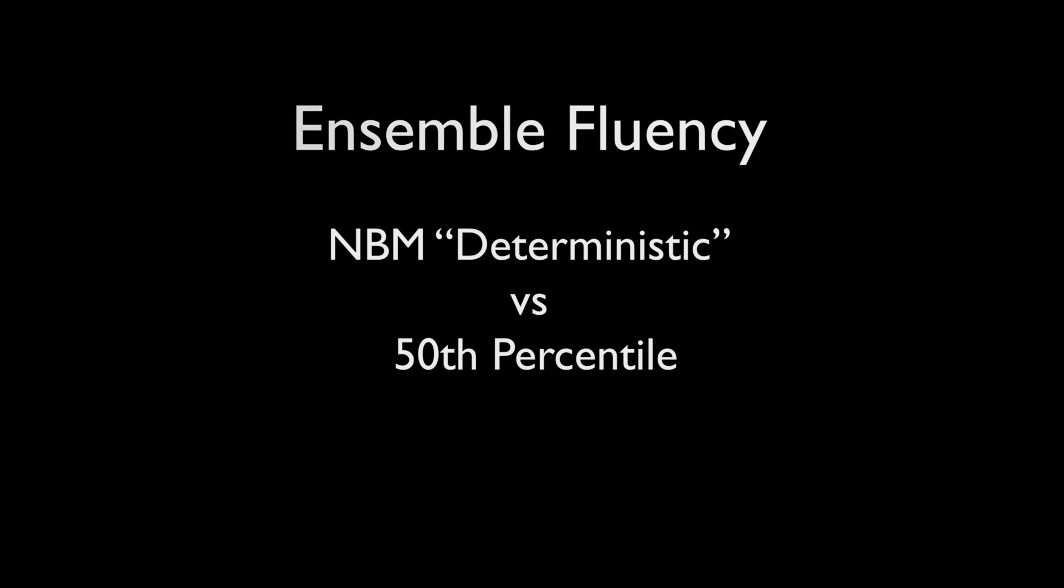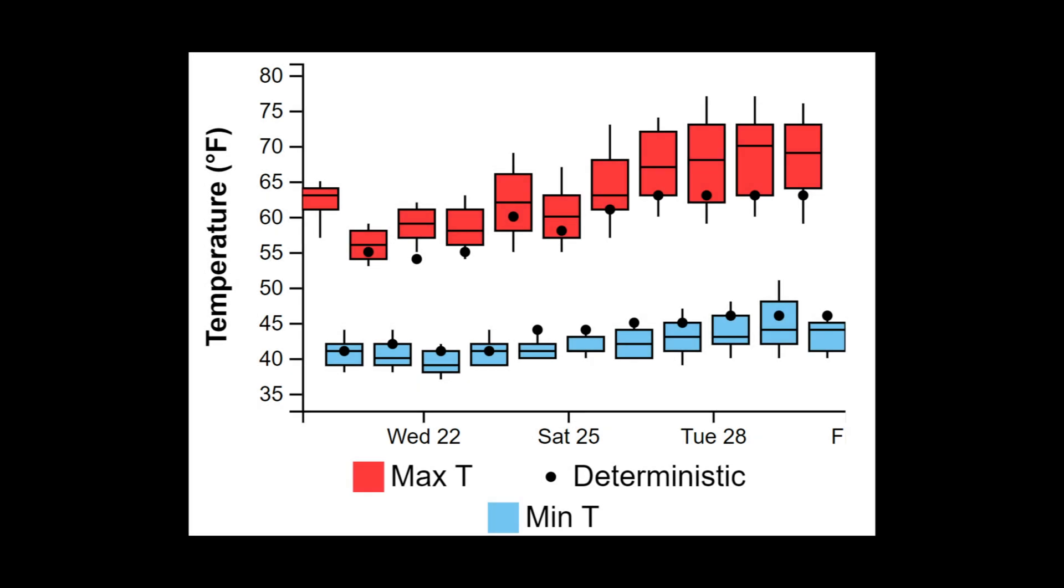Oftentimes, there are discrepancies when you view data from the NBM and the probabilistic information, specifically when the NBM deterministic doesn't line up with the median or 50th percentile.